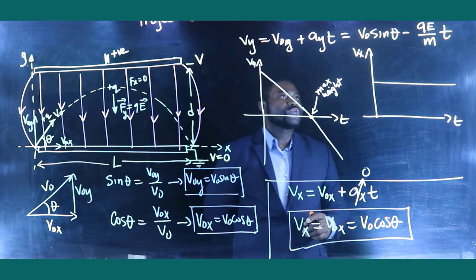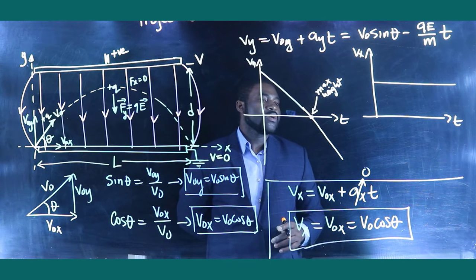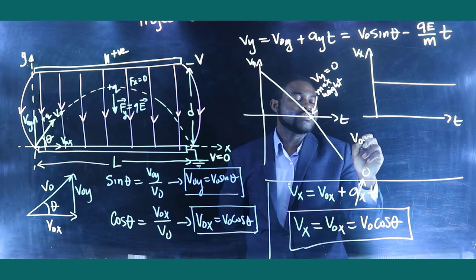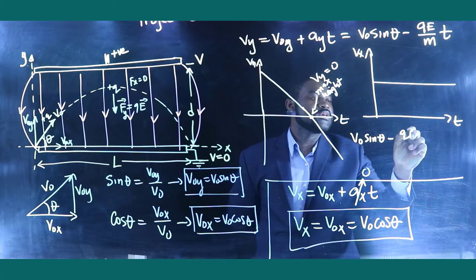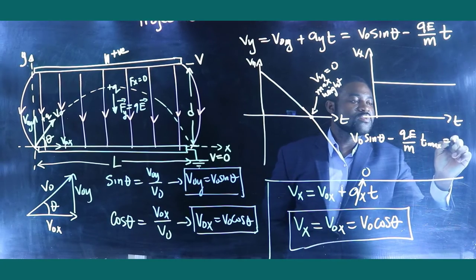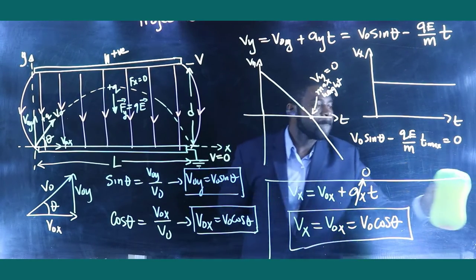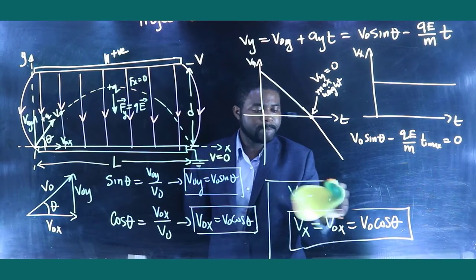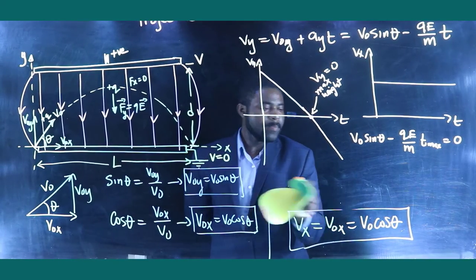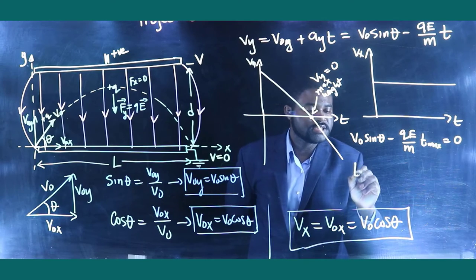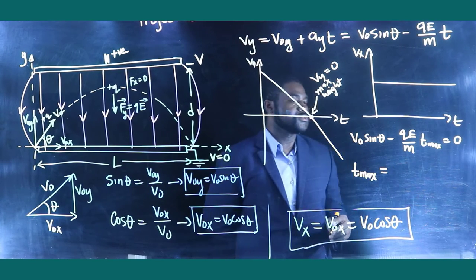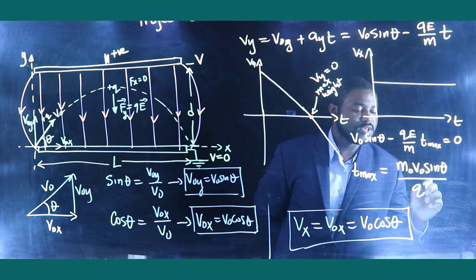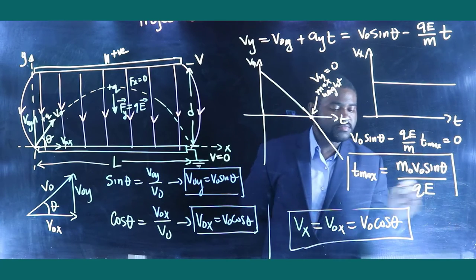The next thing is to calculate the time to reach maximum height. At maximum height, VY equals zero. This means V0 sine theta minus QE divided by M, times T max, equals zero. Solving, T max equals M V0 sine theta divided by QE. This is the time to reach maximum height.